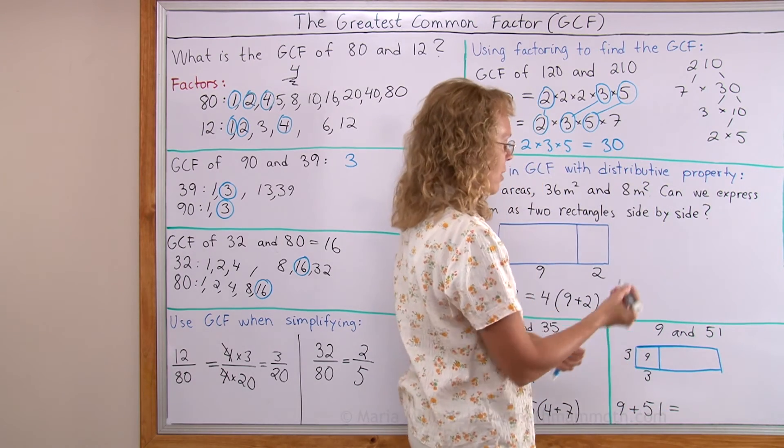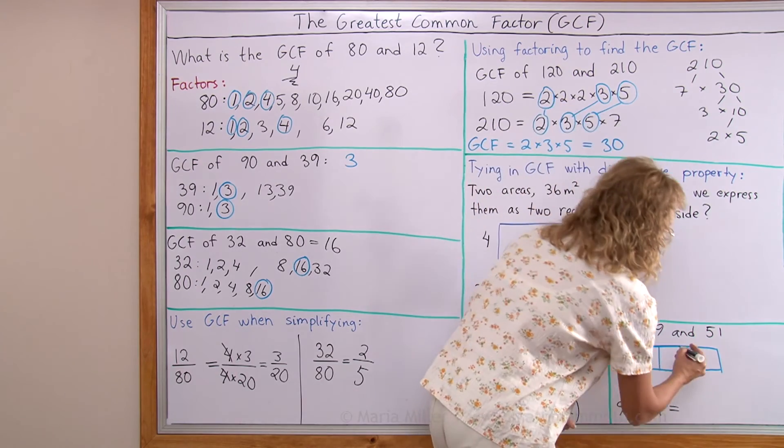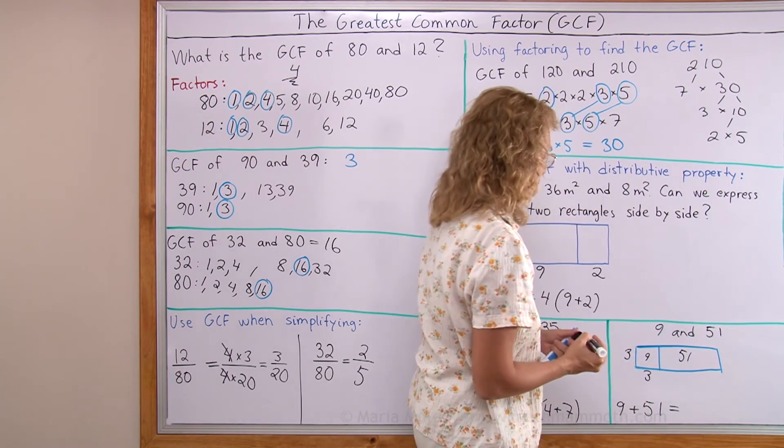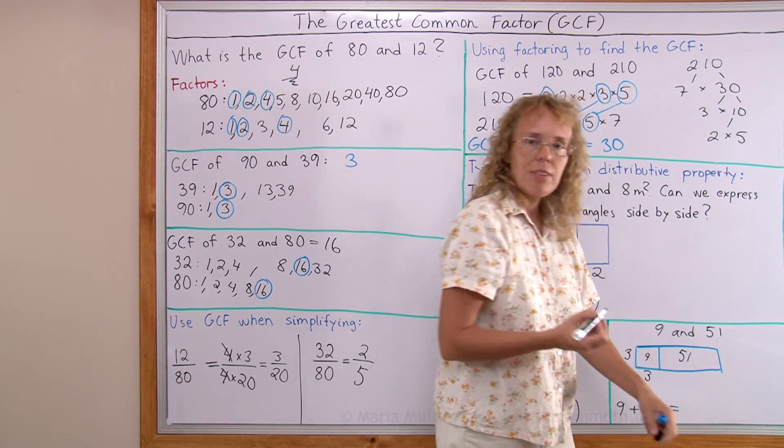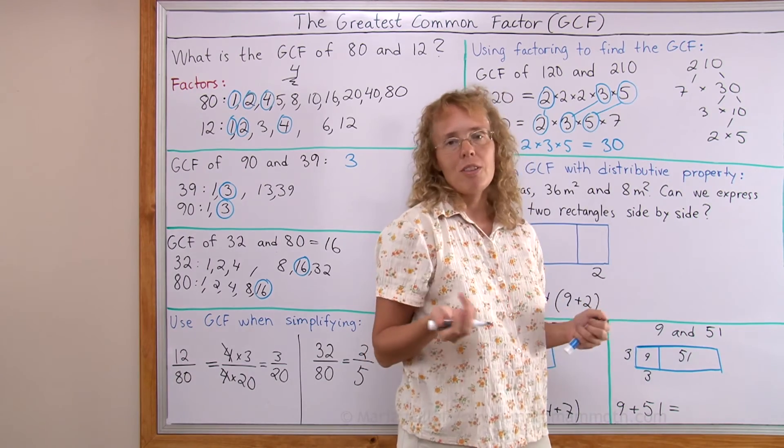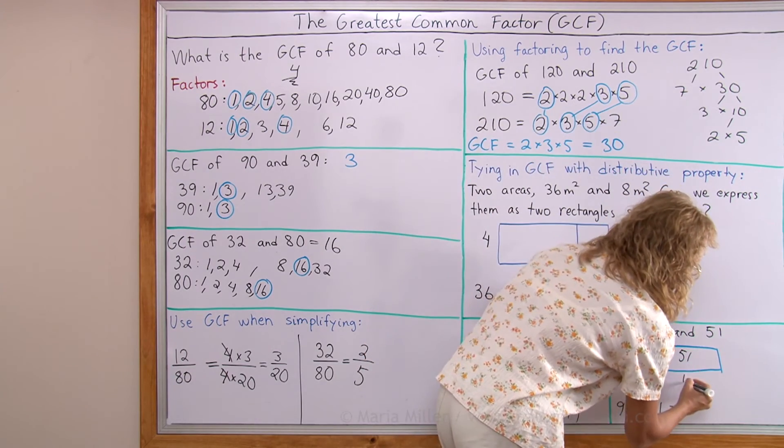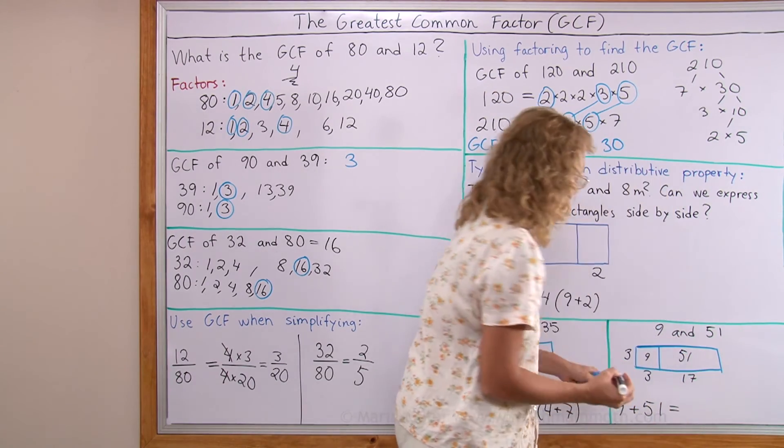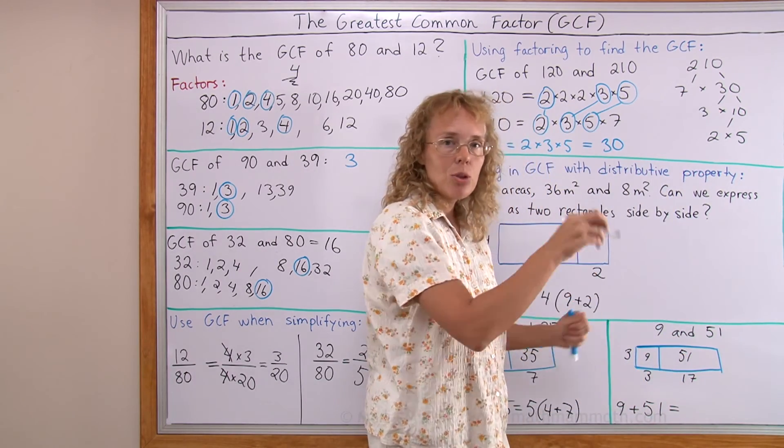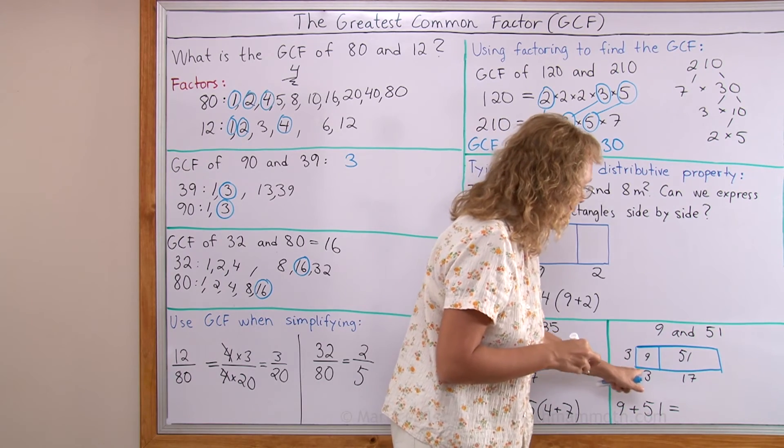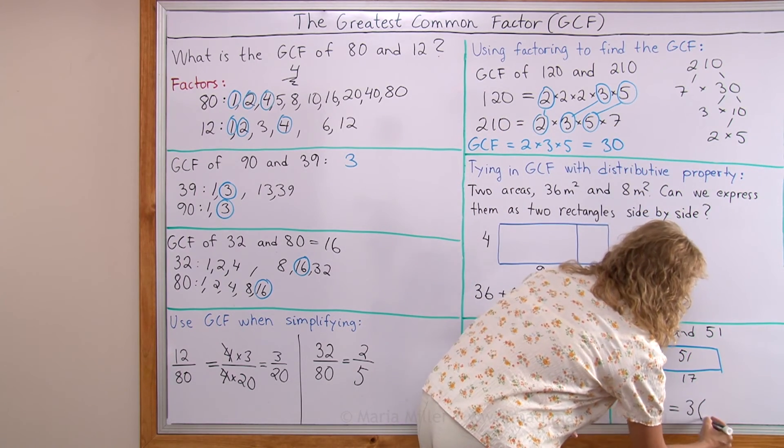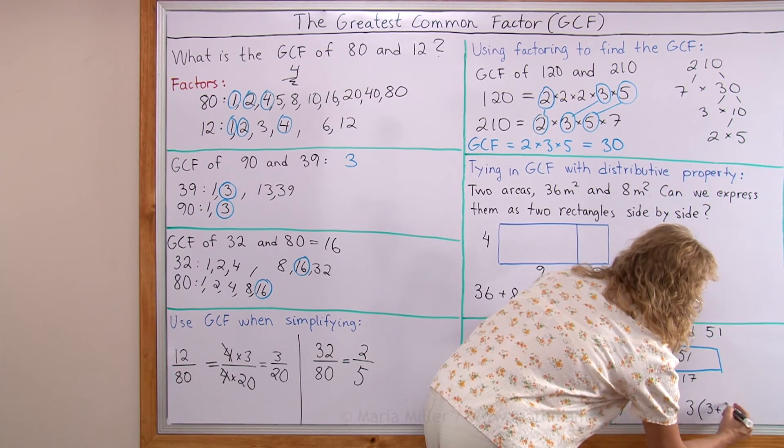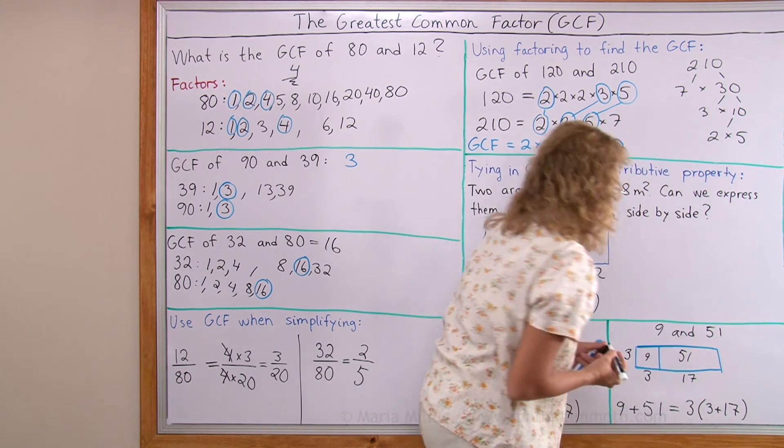So we get 9 square something. 9 square feet or whatever here. And 51 square feet here. 3 times what is 51? Maybe you need to use long division. But I happen to know by half. It's 17. And now we express this total area of the two rectangles as this times that whole side. 3 times 3 plus 17.